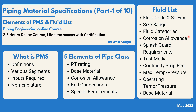We'll look into splash guard requirements, test media — how test media is defined for a particular project — continuity strip requirements, maximum temperature and pressure, operating temperature and pressure, and base material. These are the things really required to define the basic requirements of a particular project so that we can start working on the PMS. This first part is where we understand the basic inputs and various elements of any pipe class — it's going to be a very informative session, and after this there will be a few other parts.